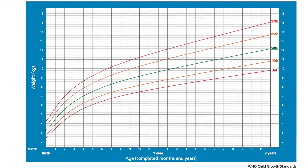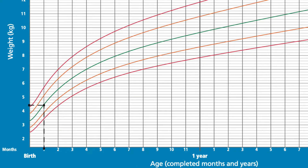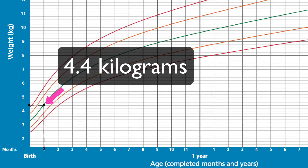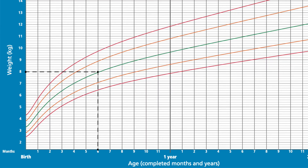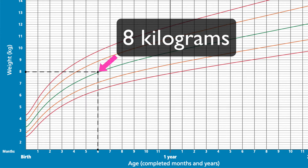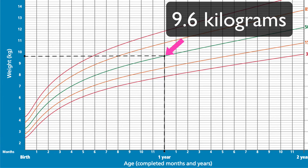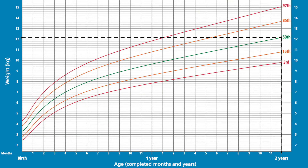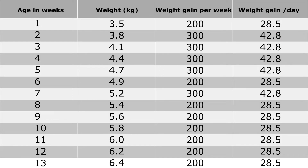The average birth weight of a boy is 3.3 kg. At 1 month, a boy's average weight is 4.4 kg; at 3 months, 6.4 kg; at 6 months, 8 kg; at 1 year, 9.6 kg; and at 2 years, 12.2 kg. Now let's look at the average weight gain for a boy in this table.